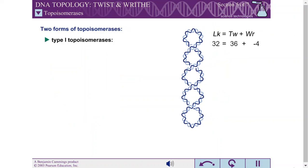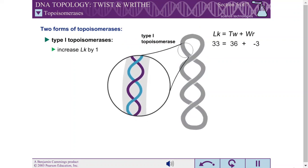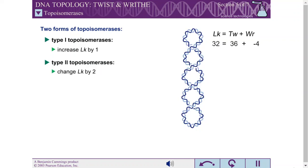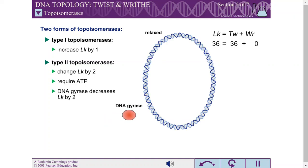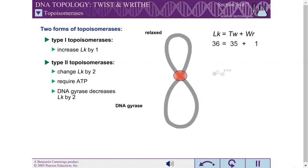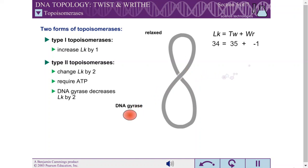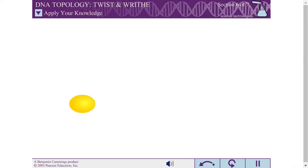There are two types of topoisomerases. Type 1 topoisomerases increase linking numbers in steps of 1; by introducing an additional twist, they relax negative supercoils. Type 2 topoisomerases change linking numbers in steps of 2 and require energy from ATP hydrolysis. By changing the handedness of turns, type 2 topoisomerases change the topology of DNA molecules. Prokaryotes have a special type 2 topoisomerase called DNA gyrase, which decreases linking numbers in steps of 2 and is responsible for the negative supercoiling of chromosomes in prokaryotes. You have discovered a protein with an amino acid sequence similar to known topoisomerases — how can you determine if your protein is a topoisomerase?